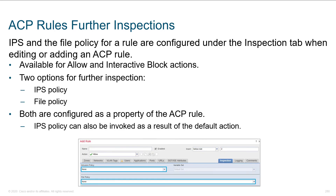When you want to leverage deeper inspection for a rule, on the right side of the rule there's an inspection tab. Within it, there's a drop-down to select your intrusion policy and another drop-down to set the file policy. This allows you to take that policy — a collection of many parameters — and apply it to a particular traffic flow. The if condition from zones, networks, users, applications, and ports determines which traffic flows receive that inspection.